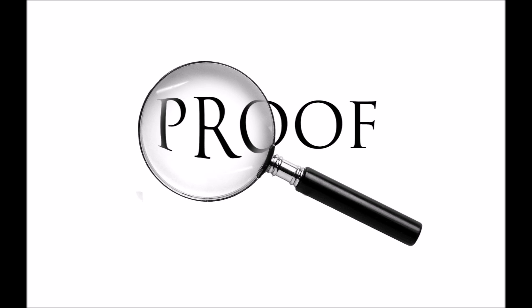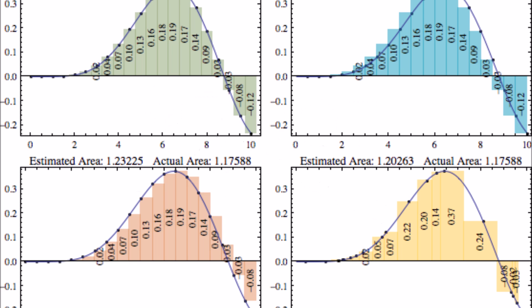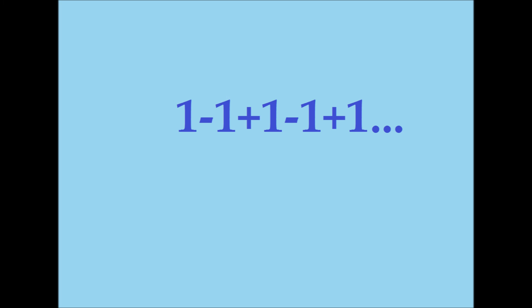Now, I can hear you shouting how can this be, so I'll prove it to you, and just because I'm a nice guy, I won't use Riemann's sums. Let's start with the infinite series: one minus one plus one minus one plus one, et cetera. The sum of that series is equal to one-half, and that kind of makes sense. This is called Grandi's Series, and to learn more about how it works, click the screen now for a lovely video by the wonderful team at Numberphile.